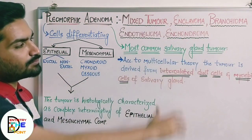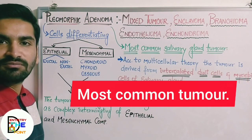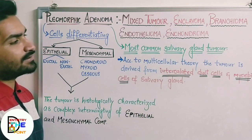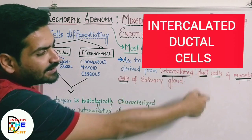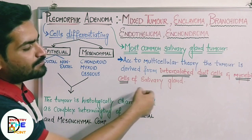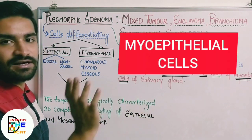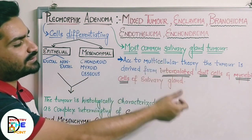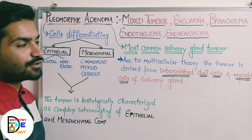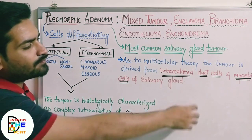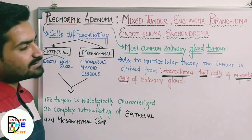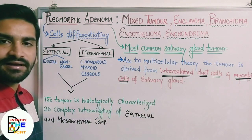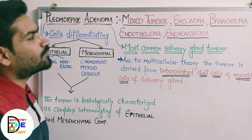This is one of the most common salivary gland tumors. According to the multicellular theory, the tumor is derived from intercalated duct cells and myoepithelial cells of the salivary gland. It is suggested that the tumor may arise or be derived from intercalated ductal cells and myoepithelial cells. This concludes the introduction of pleomorphic adenoma.